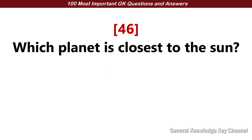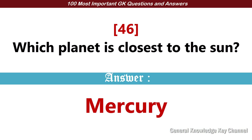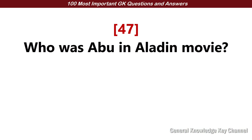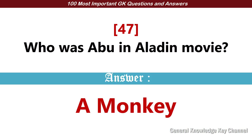Which planet is closest to the sun? Answer: Mercury. Who was Abu in the Aladdin movie? Answer: A monkey.